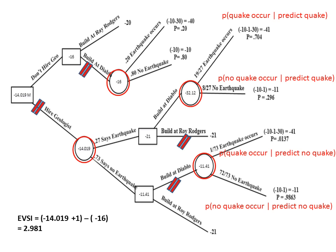To calculate the expected value of sample information (EVSI): take the branch where we hire the geologist, remove the $1 million geologist cost (add back $1M since we're working with costs), then subtract the expected cost of not hiring the geologist. The result is $2.98 million — that is the maximum amount you'd be willing to pay the geologist. Since we only pay $1 million, which is less than this maximum, we go ahead with the decision to hire the geologist, as the payoff still benefits us.